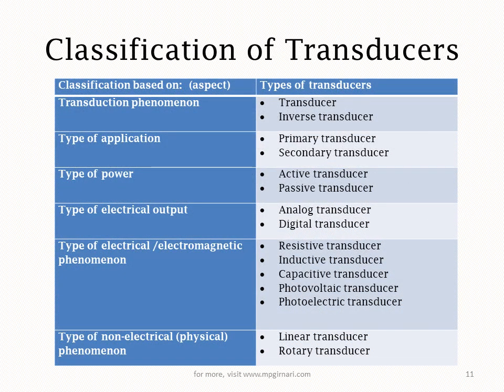Ab classification ki baat ho gayi thi — sensor kya hai, transducer kya hai, etc. Now coming on to the classification of transducer. Ab classification toh hum log kar sakte hain — kis aadhar pe karein? Basically maine 5 to 6 aspects nikale hain jiske aadhar pe hum log classify kar sakte hain.